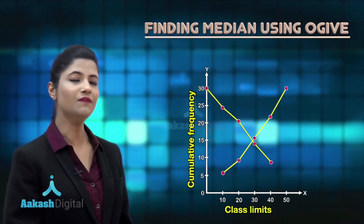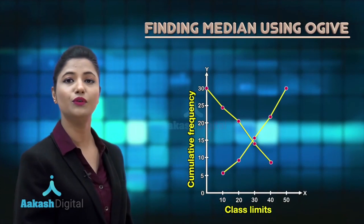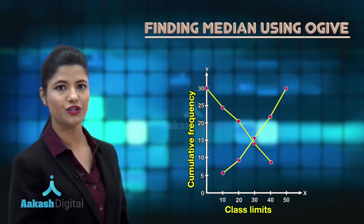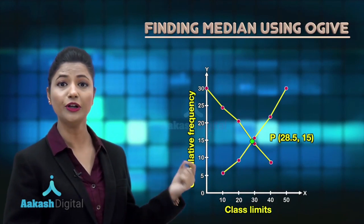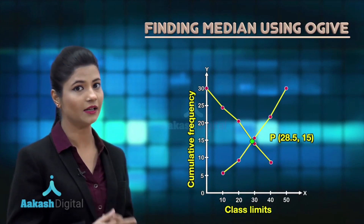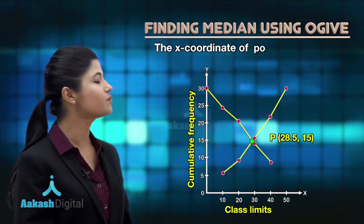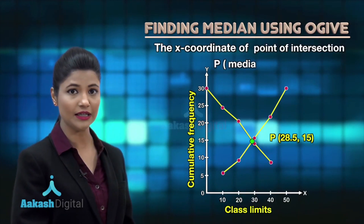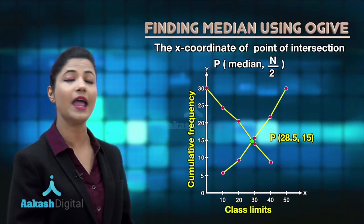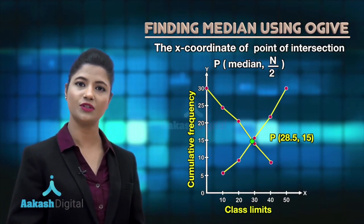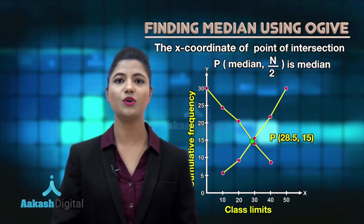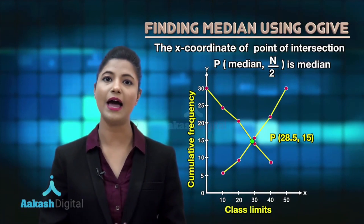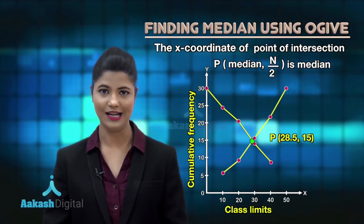Both the less than type and more than type ogives help you obtain the median graphically. For the same data set, if you draw both ogives, they intersect at a common point. This point of intersection helps you obtain the median graphically. The x-coordinate of this point of intersection is the median, while its y-coordinate is n/2. In this way, you use ogives to obtain the median graphically and can do so for various data sets.